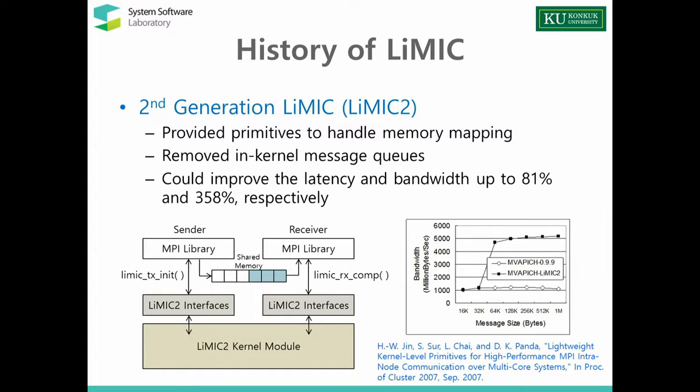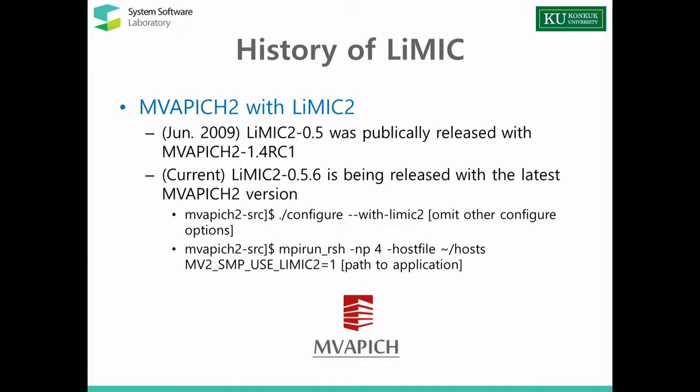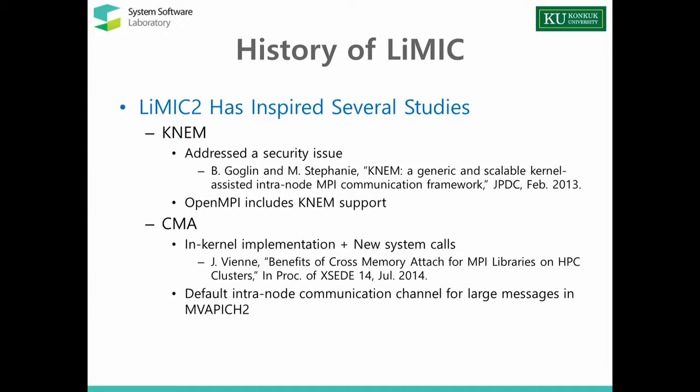We released the source code of LIMIC2 with MVAPICH2 in 2009, and the current version of LIMIC2 is 0.5.6. After releasing the source code, it inspired several studies such as KNEM and CMA, which were also mentioned in a presentation this morning. Compared with LIMIC2, KNEM addressed a security issue, and CMA is an in-kernel implementation providing new system calls. Currently, KNEM is supported by OpenMPI, and CMA is the default intranode communication channel for large messages in MVAPICH2.